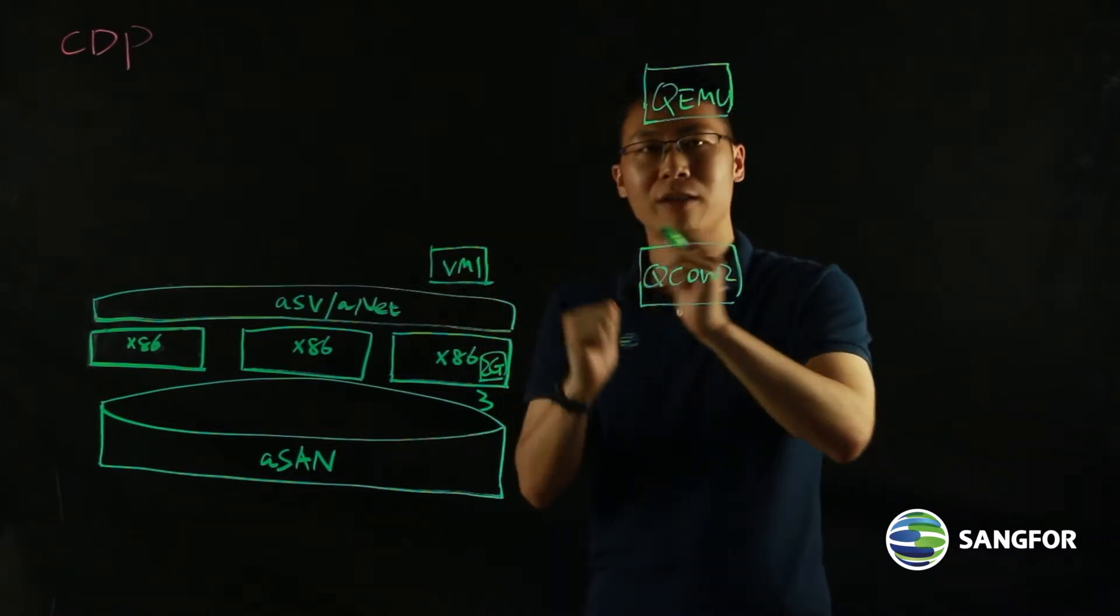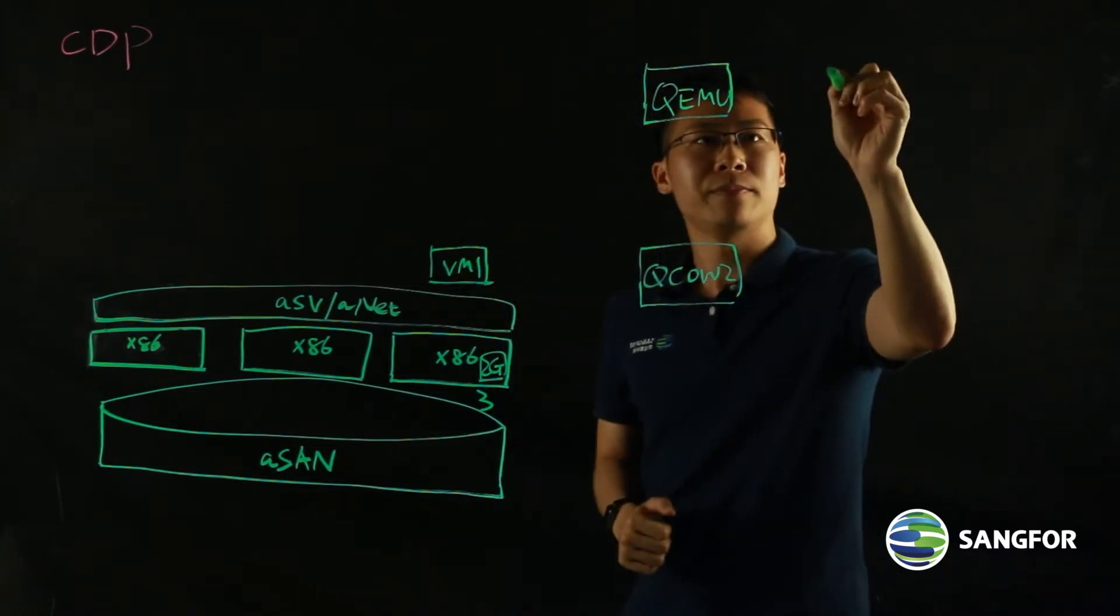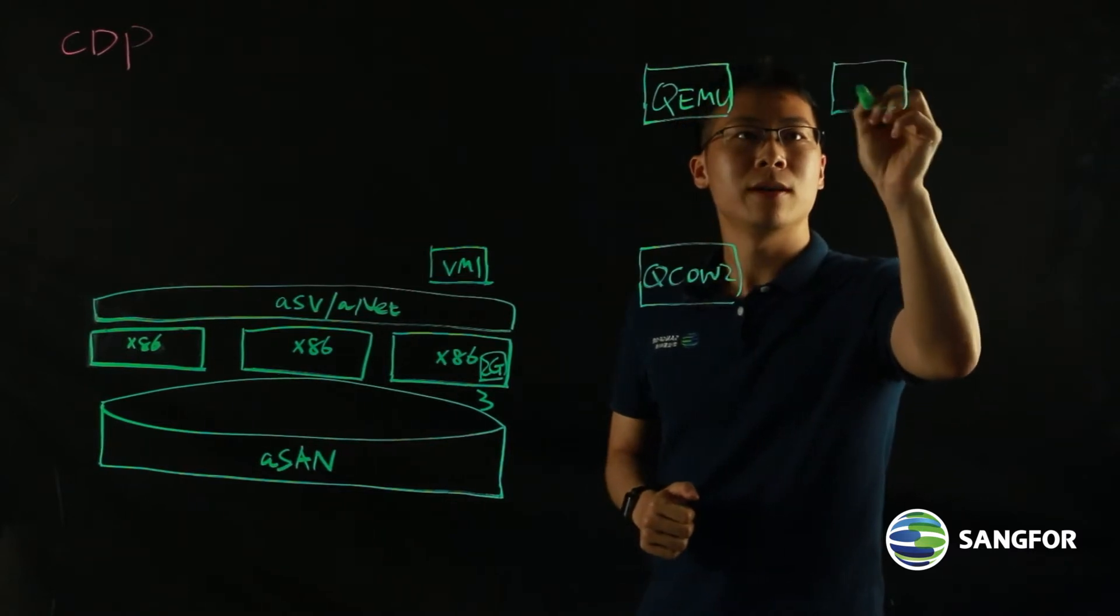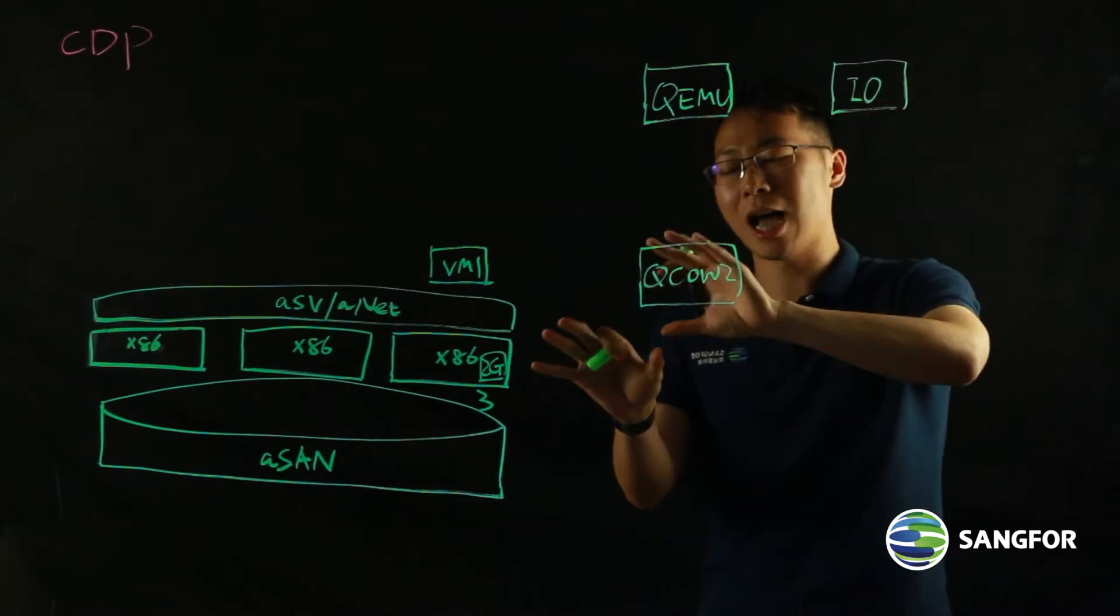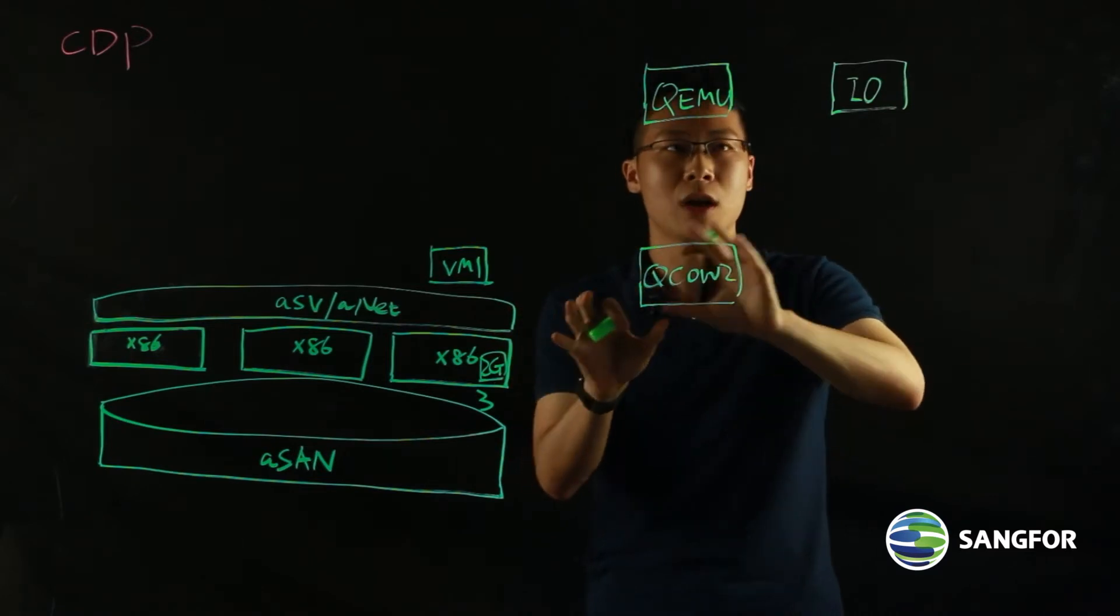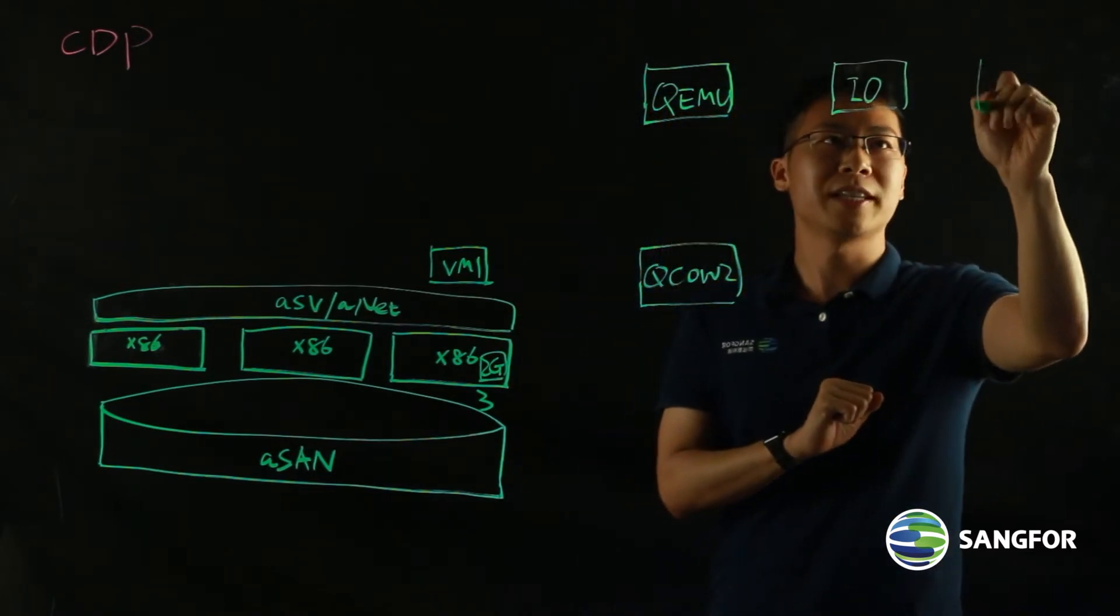If I enable CDP for that VM, of course, like I said, there is an IO buffer. That is, maximum 2GB, and there is a CDP worker.